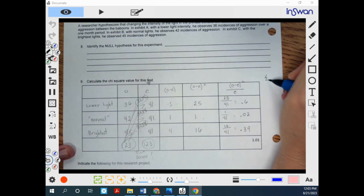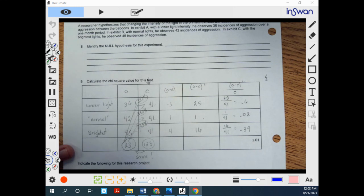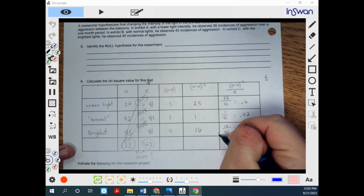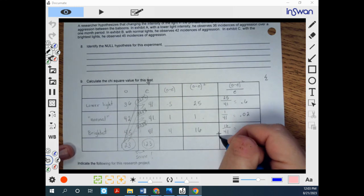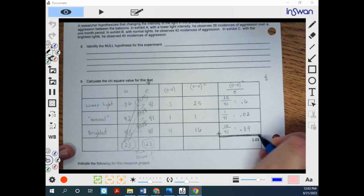And remember that fancy looking E in that formula means sum. I like to put my addition sign and my equal sign down here just to always help remember that whenever I'm done with this column, I'm not done until I finally add those up. So when you add up those three numbers, you should be at 1.01.